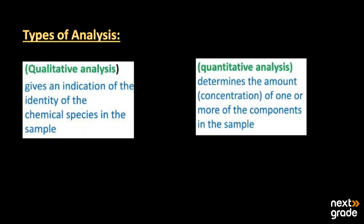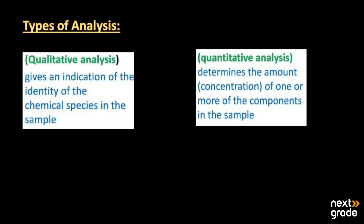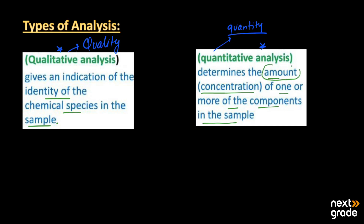Next, there are two types of analysis. The first is qualitative analysis and the second is quantitative analysis. Qualitative analysis is related to the quality of a substance — it gives an indication of the identity of the chemical species present in a sample. Quantitative analysis, on the other hand, determines the amount or concentration of one or more components in a sample.